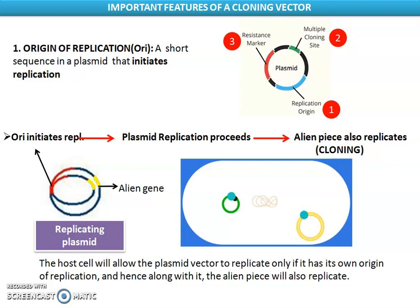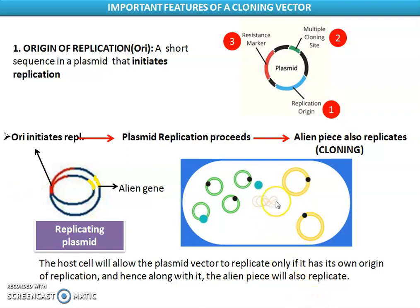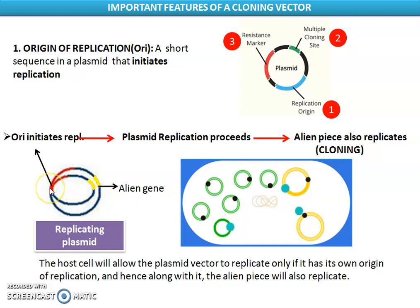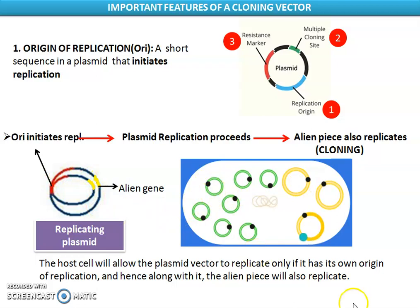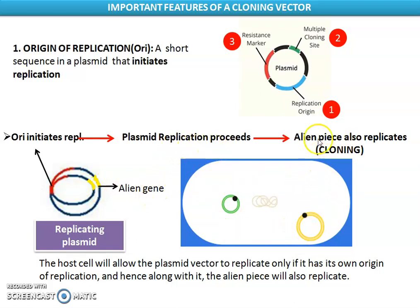The bacterial cell will provide its replication machinery, but only when the genome introduced can do its work on its own — it can replicate on its own. So the vector should have that region which starts the process of replication. Any cell undergoes replication of DNA in the S phase of the cell division cycle. When the bacterial genome is replicating, along with that, the insert on your recombinant DNA should also replicate. So origin of replication is a must to initiate replication.